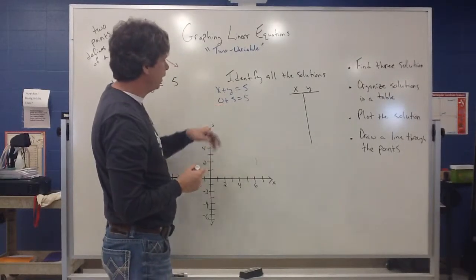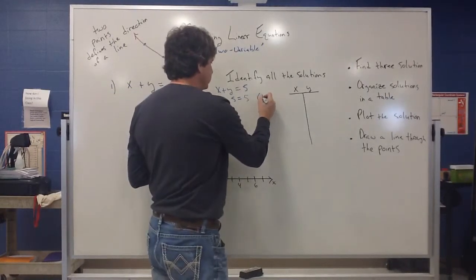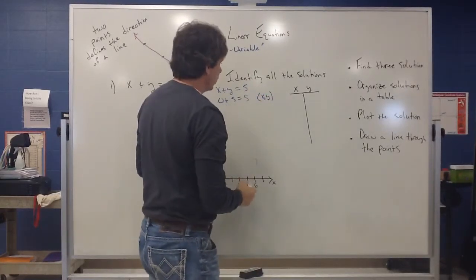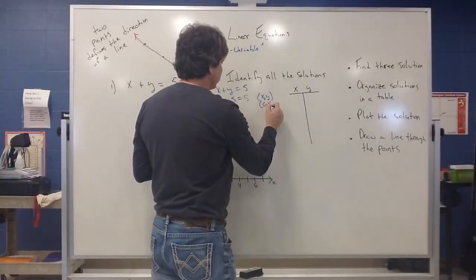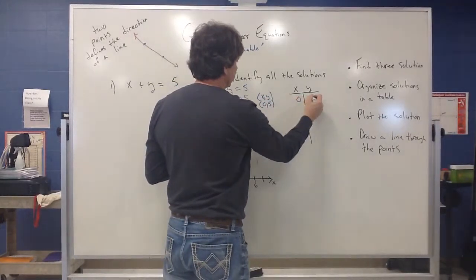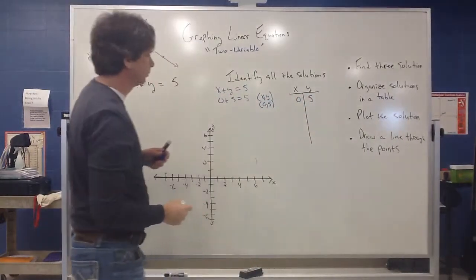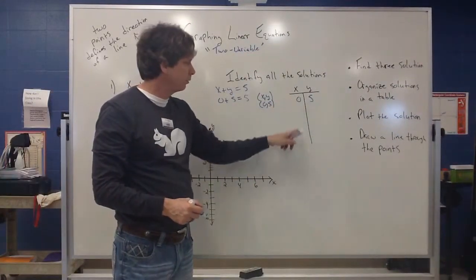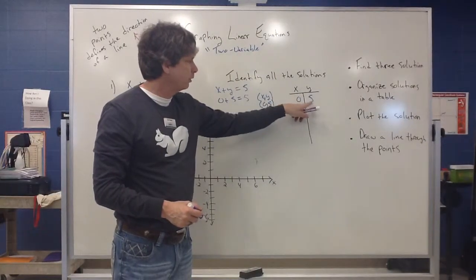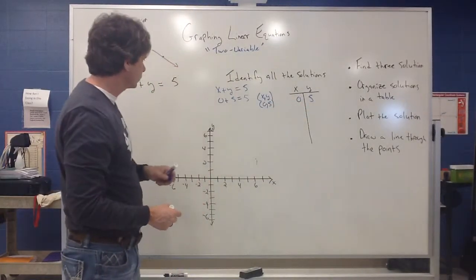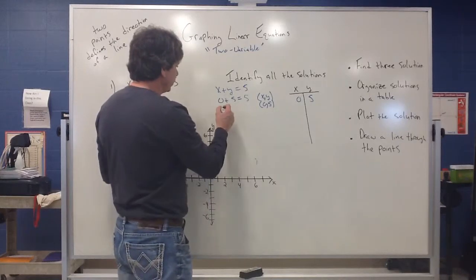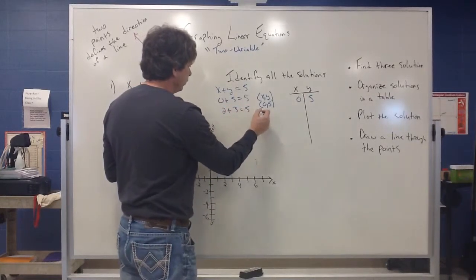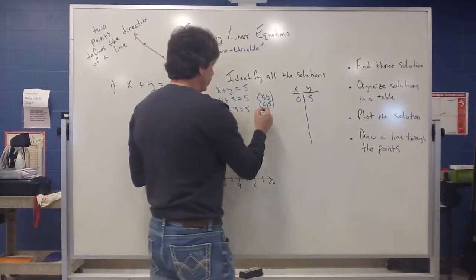So zero, five would be a solution. I can write that solution in the form of an ordered pair. And also I can order this in what we call a table. Some people call them t-charts. So I have the x value corresponding to the y value. Zero, five. Looking around here, I can also see that two plus three is five. So it tells me that two, three is another ordered pair.